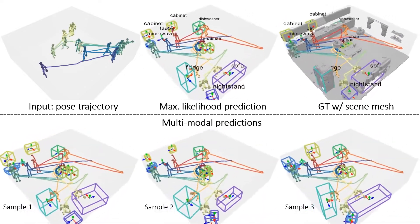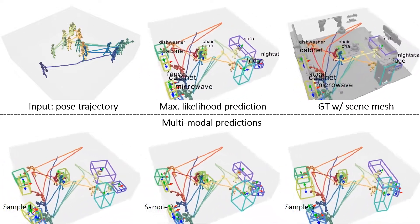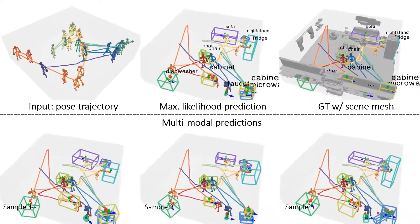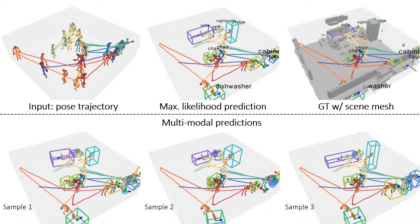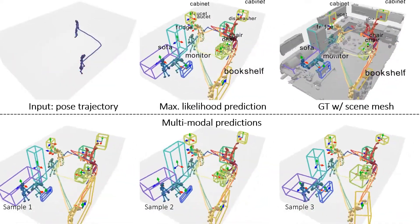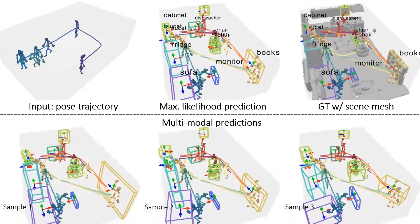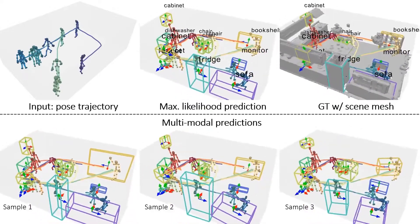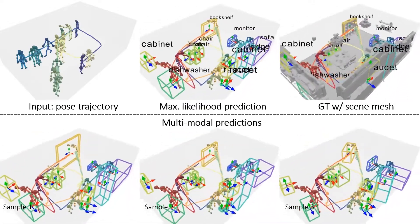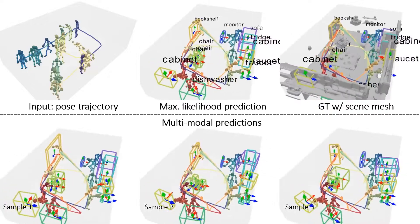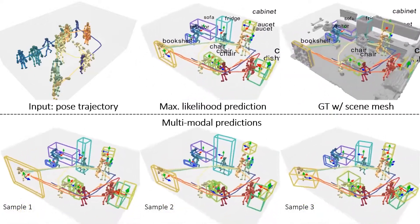Our probabilistic mixture network learns likely object-box distributions from which various object boxes that can be reasonably explained by the human interactions are sampled. The multimodal results show that our method is able to spatially reason about a scene for motion trajectories and enables diverse, plausible estimation of object locations, orientation, and sizes for interactions.